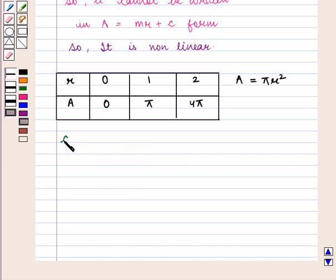Now if we see change in r, we get 1 - 0 = 1 and 2 - 1 = 1, so it is constant.